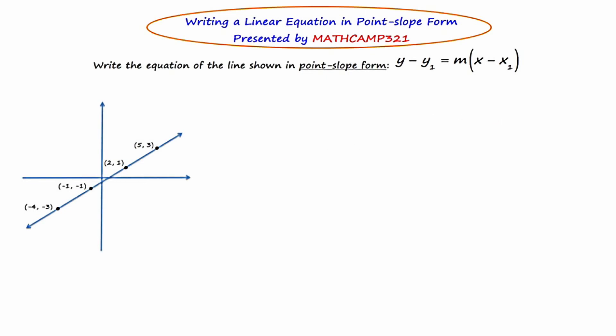A couple things that I would just like to make very clear to you is that when you're using point-slope form, the very first y that you see in the equation stays y, and the very first x that you see in the equation stays x. So you're not going to substitute in for the first y or for the first x.